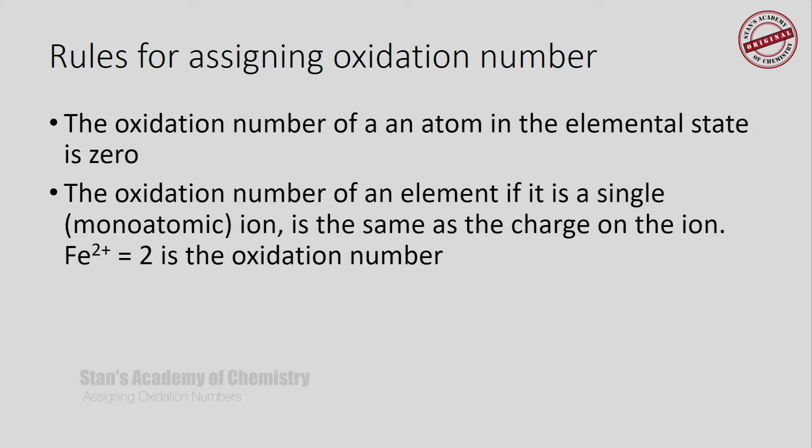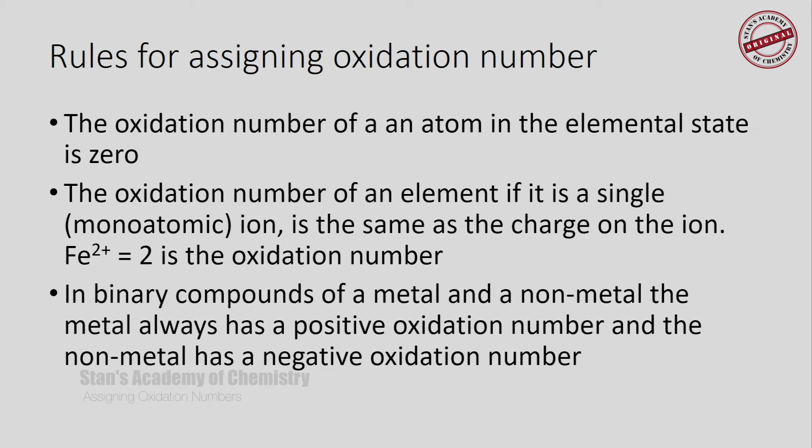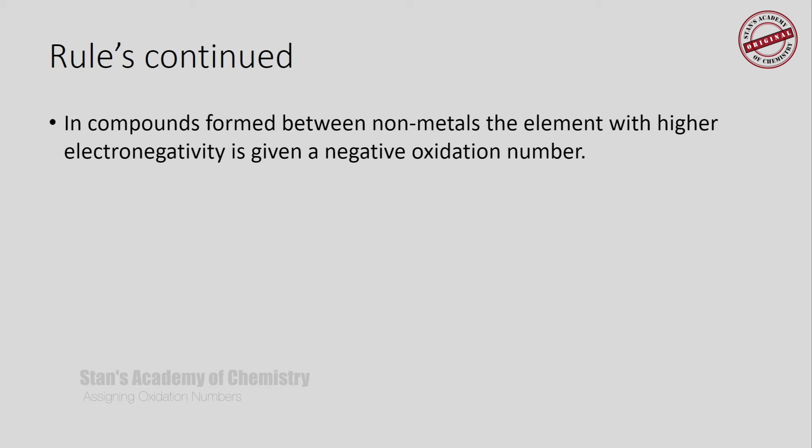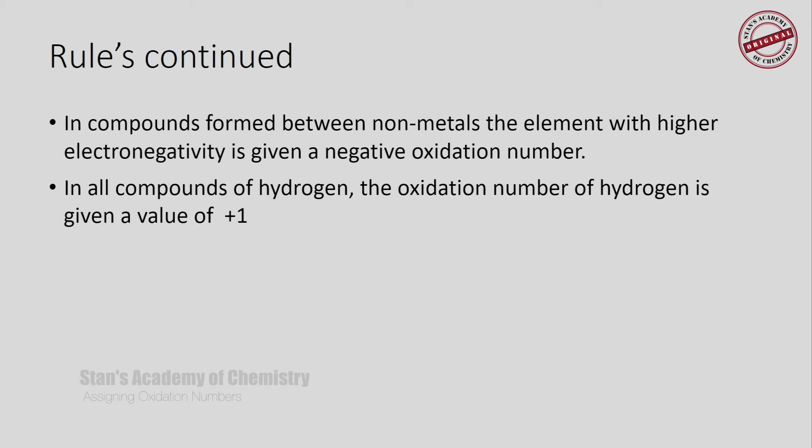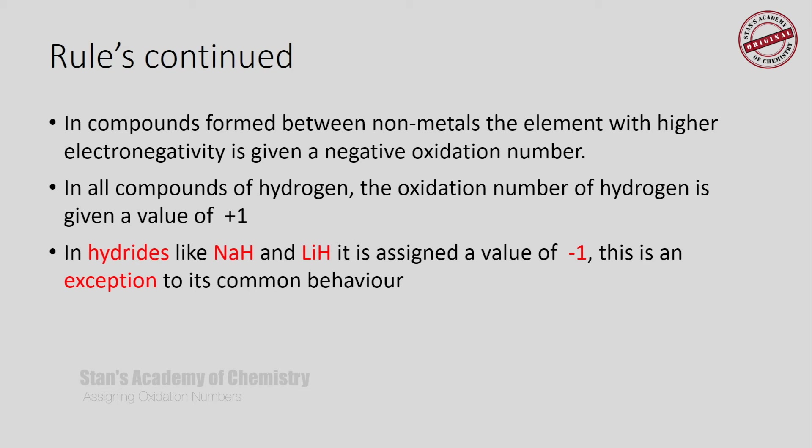In binary compounds of metals and nonmetals — ionic compounds — the metal always has a positive oxidation number and the nonmetal has a negative oxidation number. In compounds formed between nonmetals, the element with higher electronegativity is always given a negative oxidation number. In all compounds of hydrogen, the oxidation number of hydrogen is +1. However, in hydrides such as sodium hydride and lithium hydride, hydrogen is assigned a value of -1. This is an exception, so if you see a hydride compound, the oxidation number of hydrogen should be considered as -1, not the common +1.